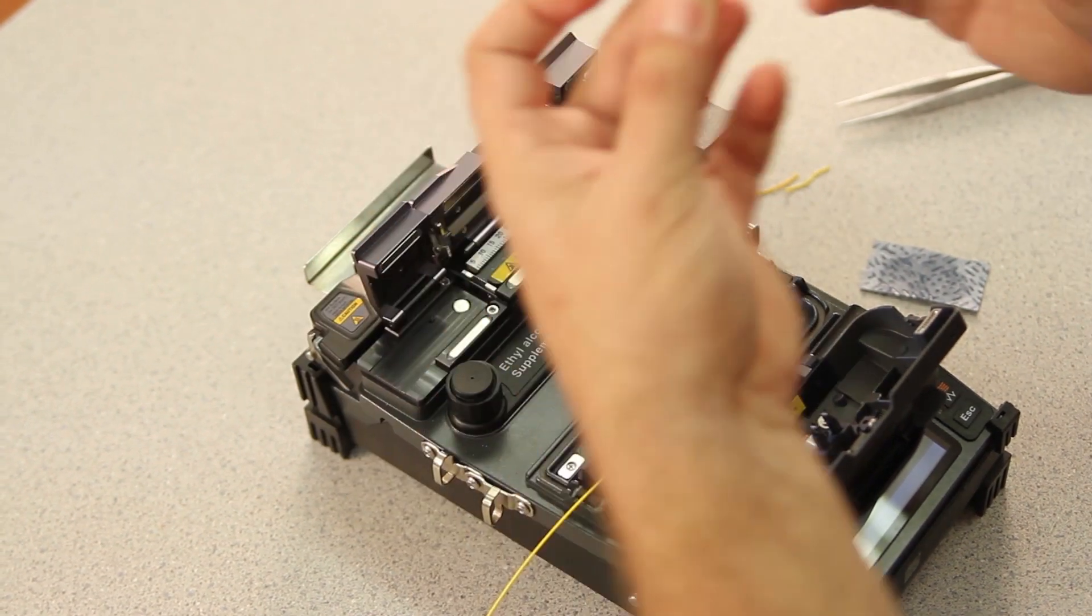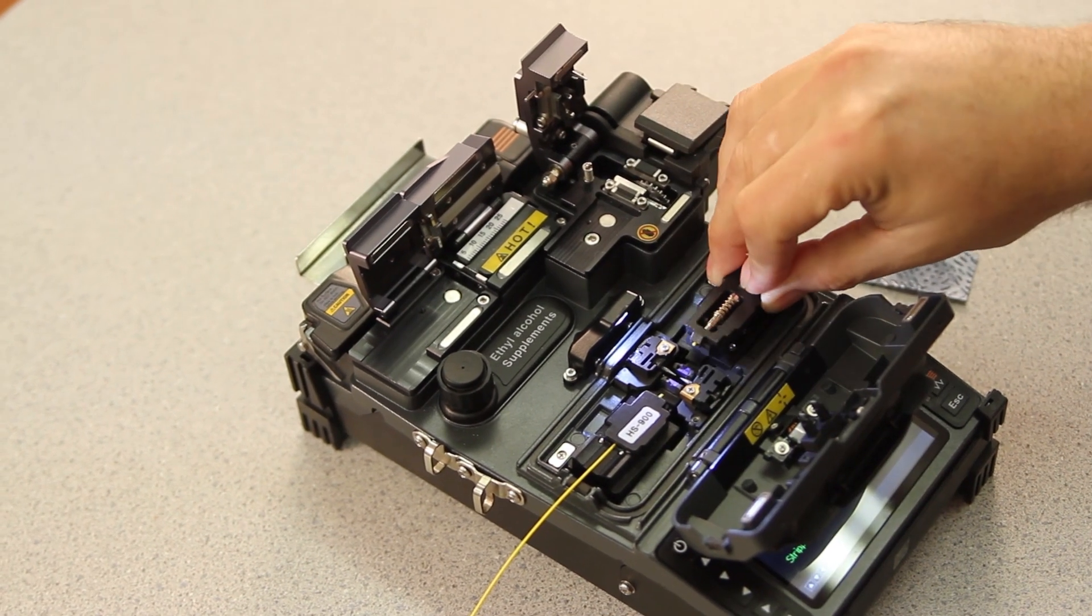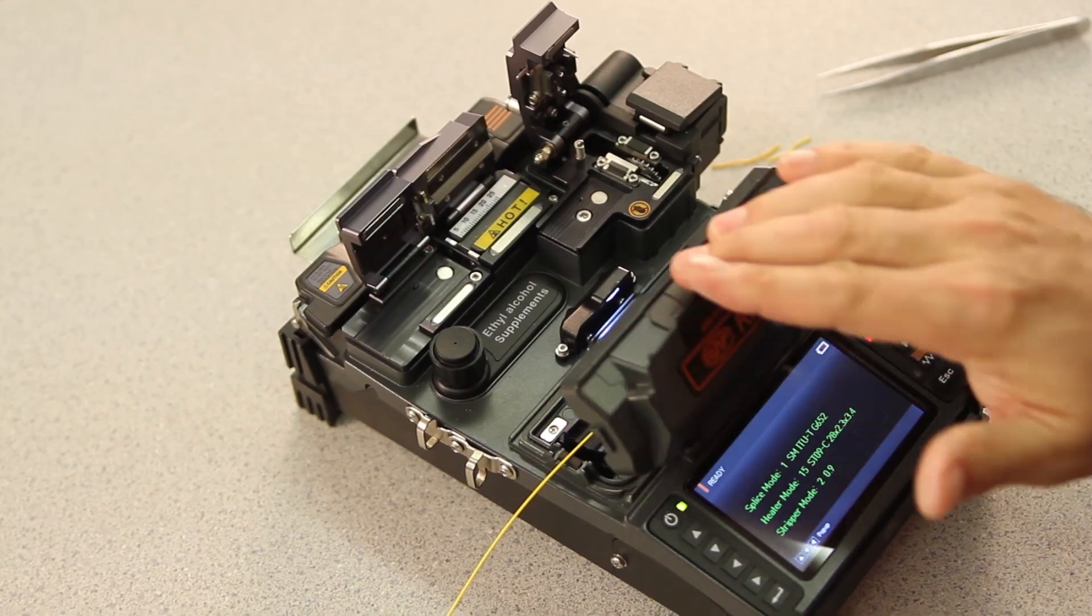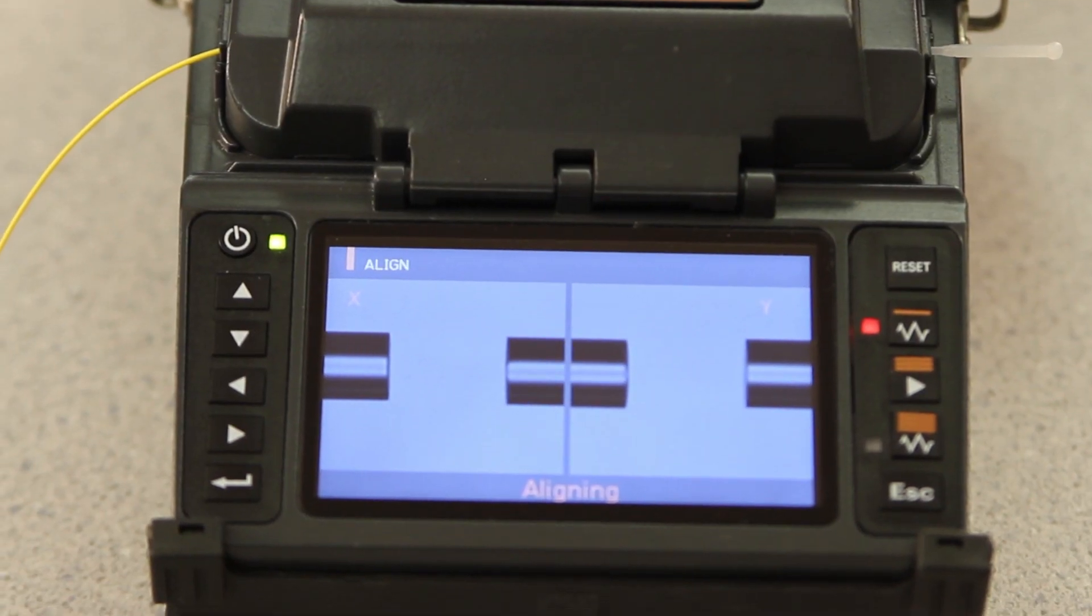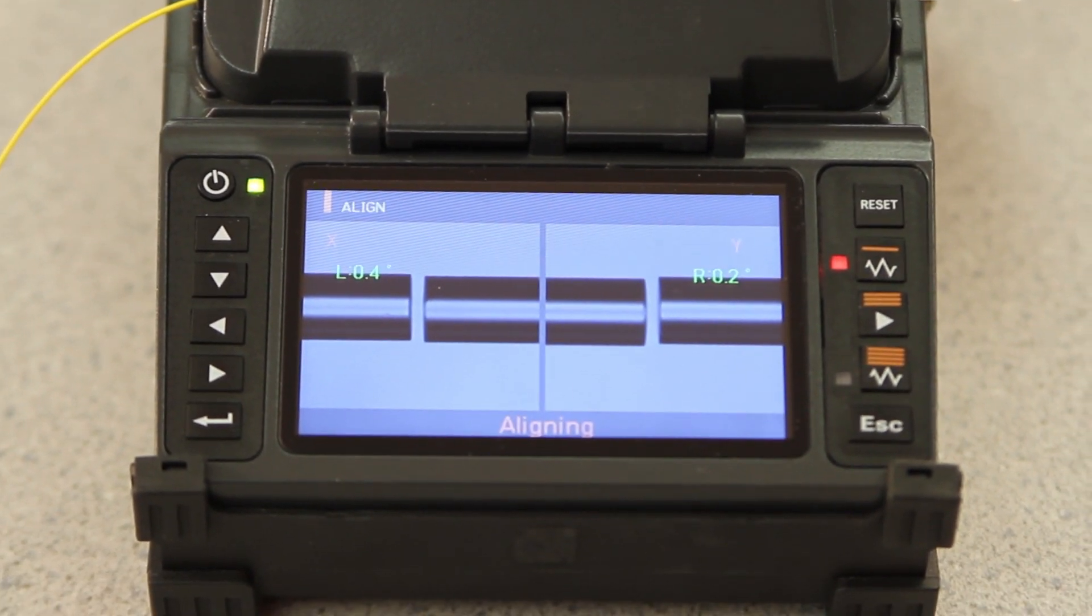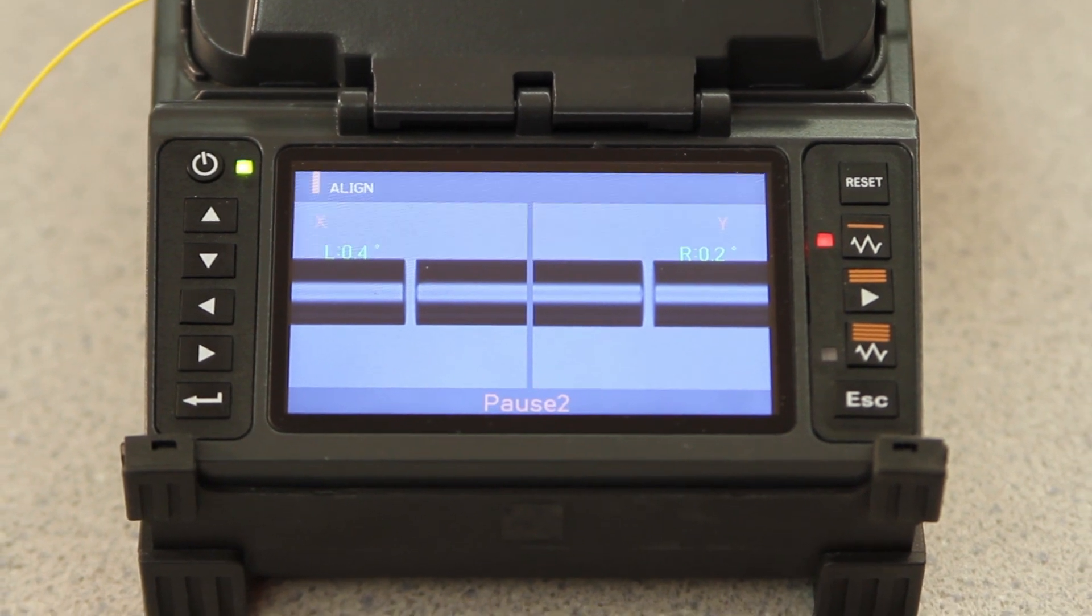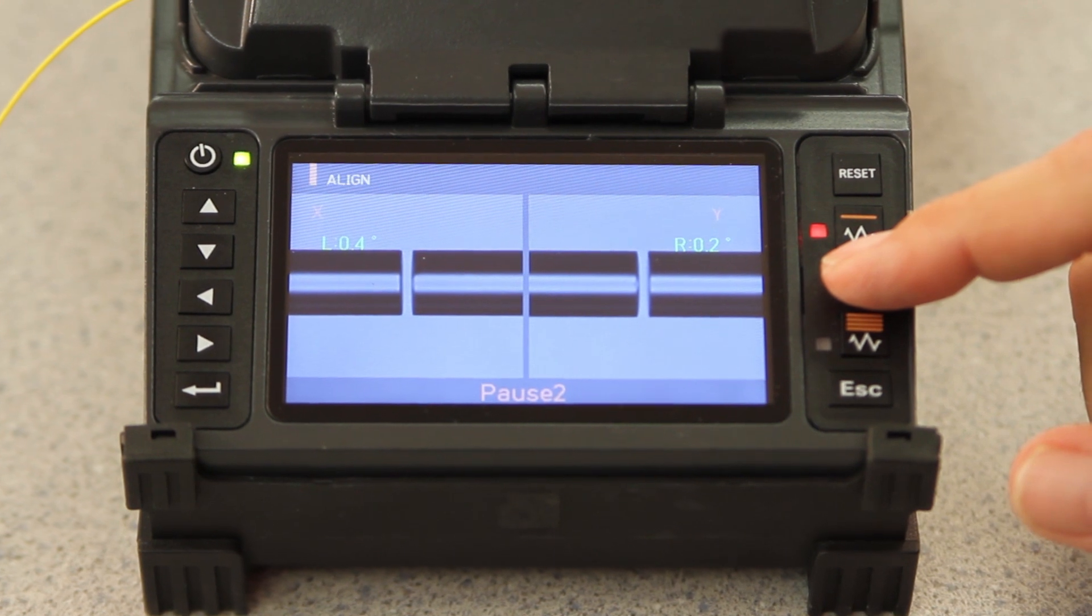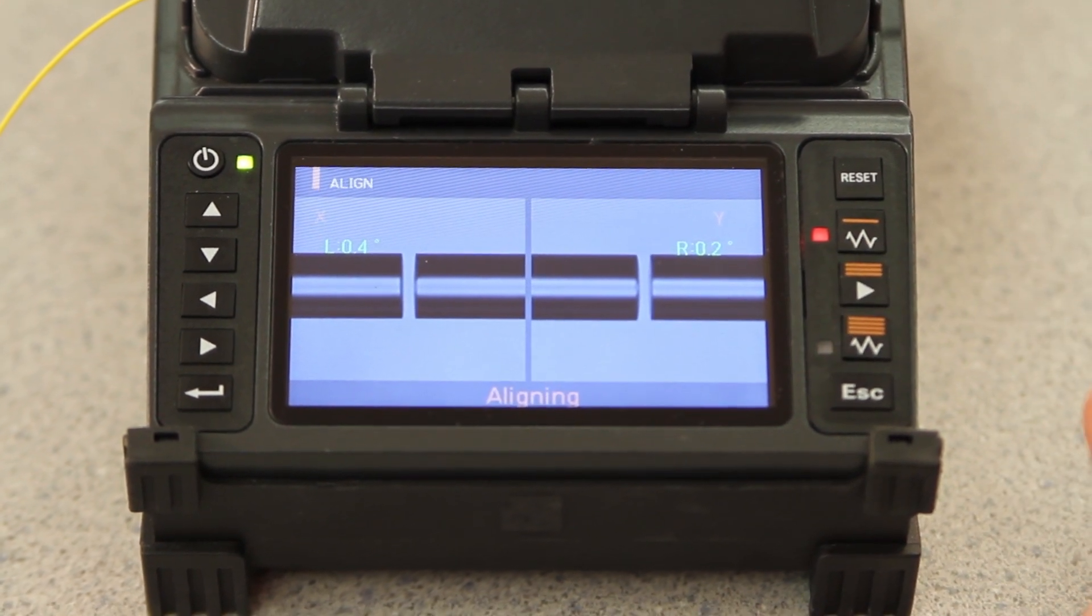Fully engage again. Remove your holder and place in your splicer. At this point, close your wind cover and wait for your fiber to align. Once it's paused and you're happy with your left and right cleave angles, press play to complete the splice.